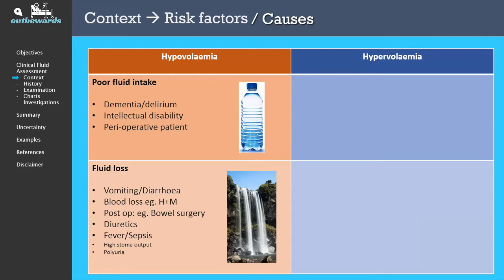Fever or sepsis is a special one where there is no true fluid loss. However, vasodilation throughout the body means that patients may be intravascularly deplete, which can then compromise perfusion. Some other scenarios include high stoma output and polyuria, which may be secondary to uncontrolled diabetes or hypercalcemia.